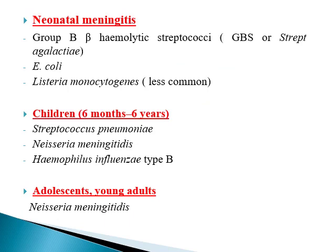You can classify meningitis according to the age of your patient, which is very useful clinically. In neonates, the three most common bacteria are group B beta-hemolytic Streptococci, or Streptococcus agalactiae, E. coli, and Listeria monocytogenes — because they can be acquired from the birth canal of the mother during delivery. In children more than six months, the three common causes are pneumococci, meningococci, and Haemophilus influenzae type B. In adolescents and young adults, Neisseria meningitidis is the commonest.